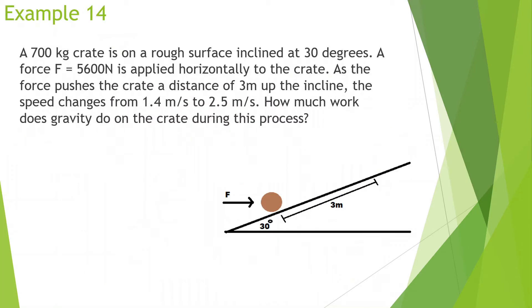A 700 kg crate is on a rough surface inclined at 30 degrees. A force of 5,600 newtons is applied horizontally to the crate. As the force pushes the crate 3 meters up the incline, the speed changes from 1.4 to 2.5 meters per second. How much work does gravity do on the crate? All it's asking for is the work done by gravity, so I'm focused on the force of gravity. At 700 kg, that's 7,000 newtons.